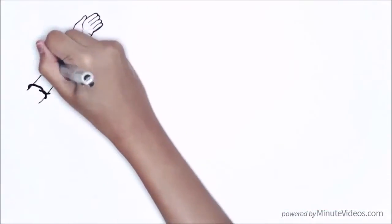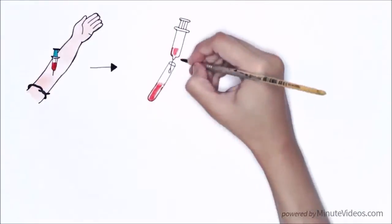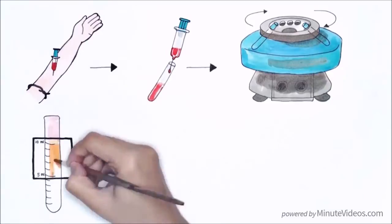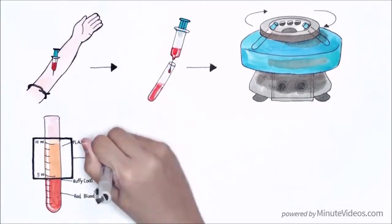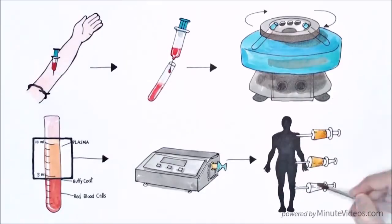PRP takes advantage of this process in a very simple way. A small amount of blood is extracted from the patient, then centrifuged to extract only the blood's platelets and plasma, photoactivated with light and then injected back into the area of injury.